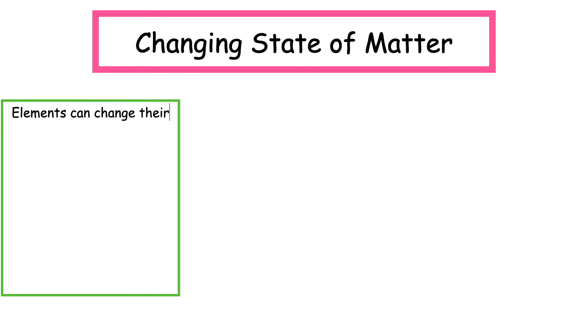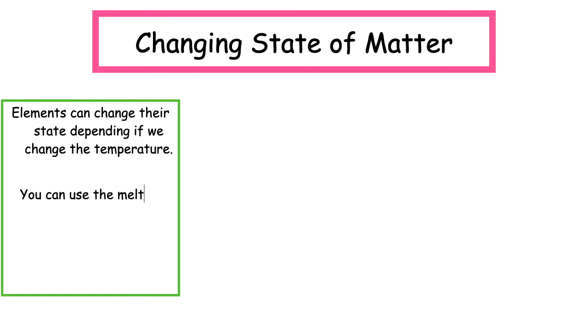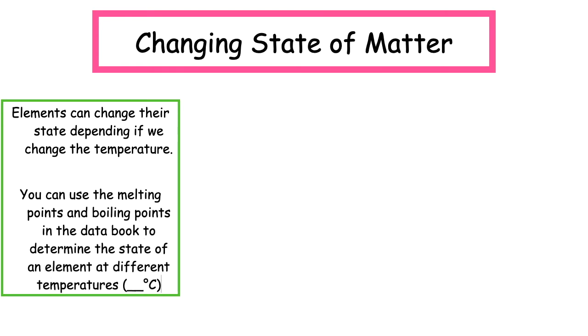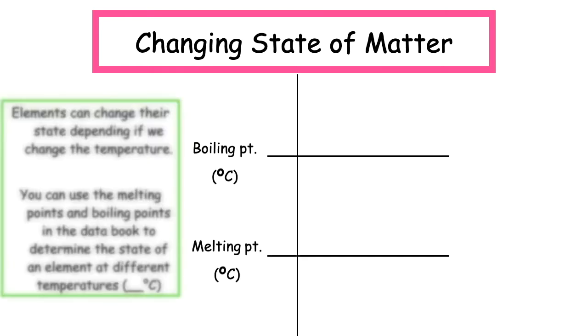Elements can change their state depending on whether we change the temperature. You can use the melting points and boiling points in the data booklet to determine the state of an element at different temperatures.